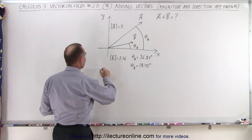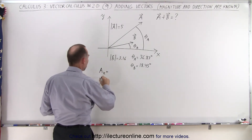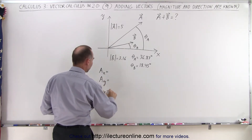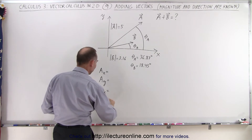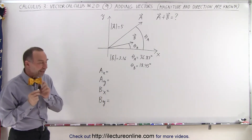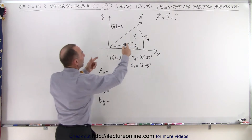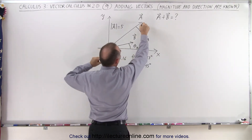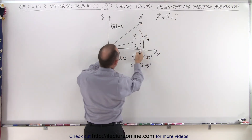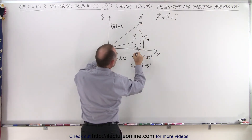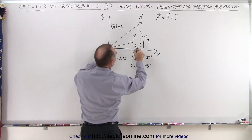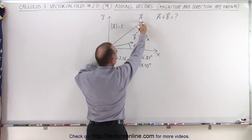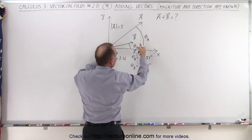We need to find the x component of vector a, the y component of vector a, and for b as well, the x component and the y component. To find the x component for vector a, we simply project vector a onto the x-axis. If you draw a line straight down like this, this becomes the x component of vector a — the vector that goes from the origin to this point on the x-axis, which is the a vector projected down onto the x-axis.